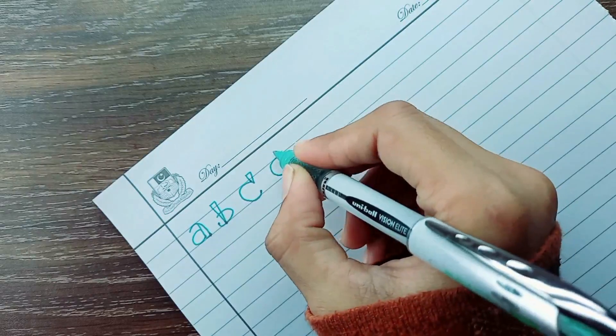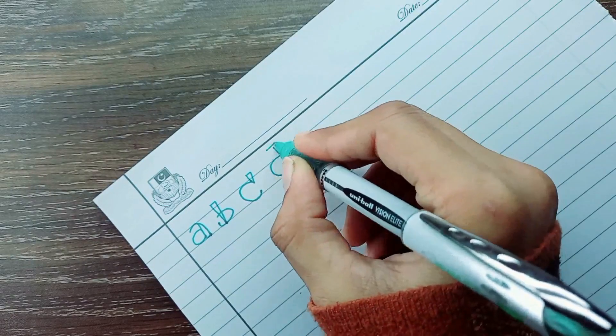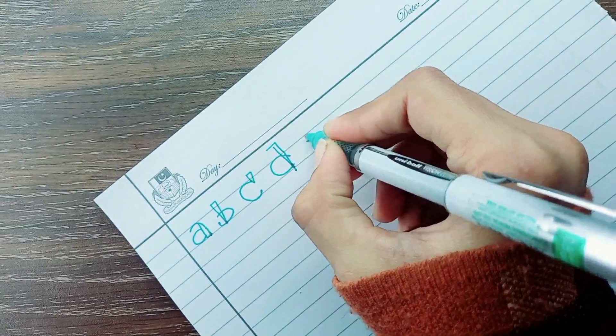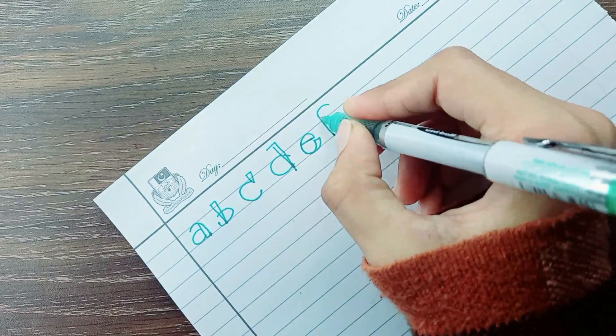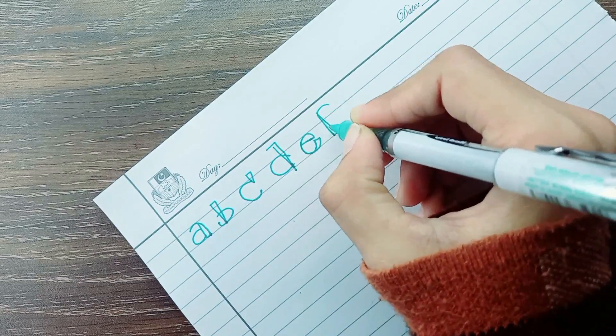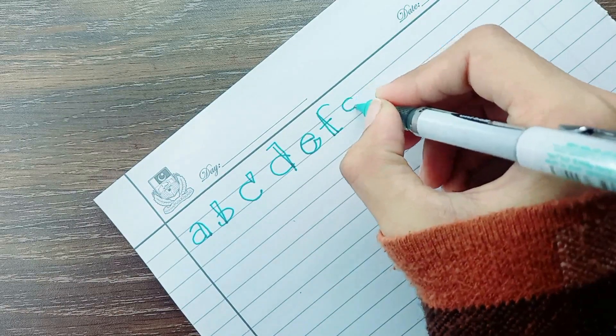D. D for dog. E. E for elephant. F. F for fish.